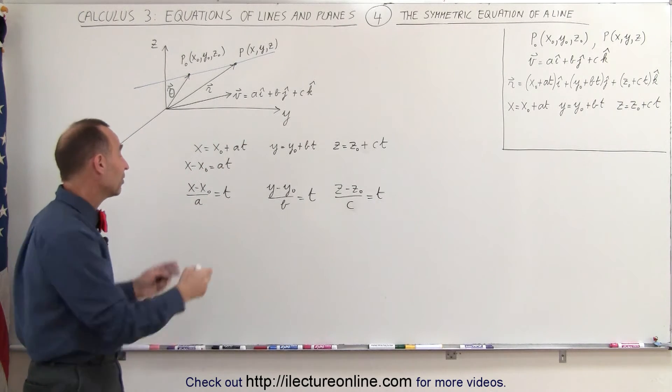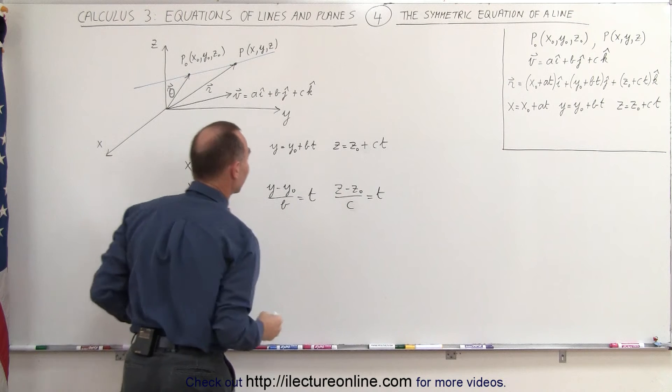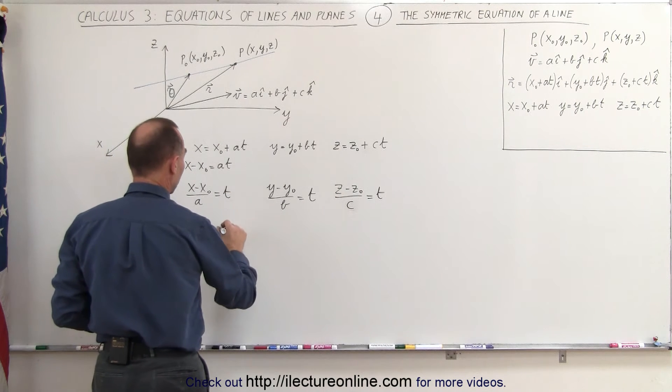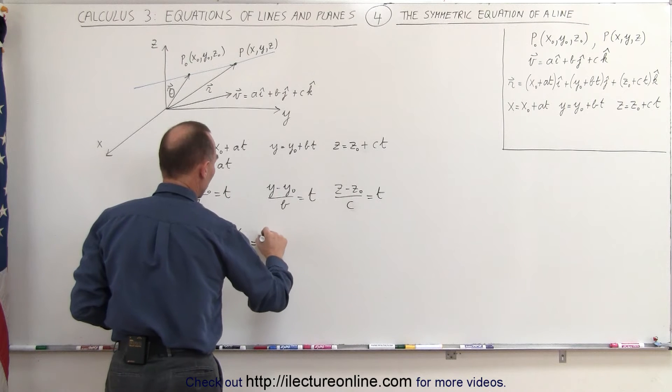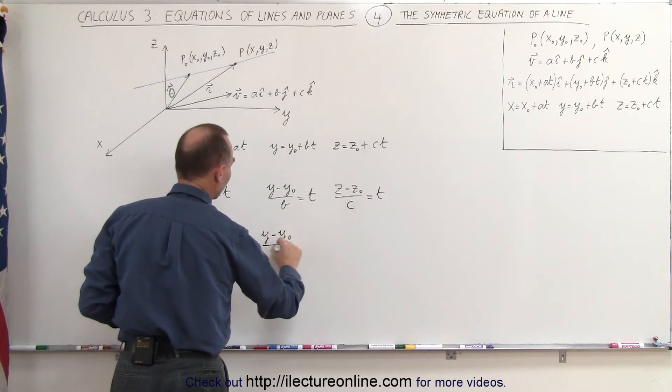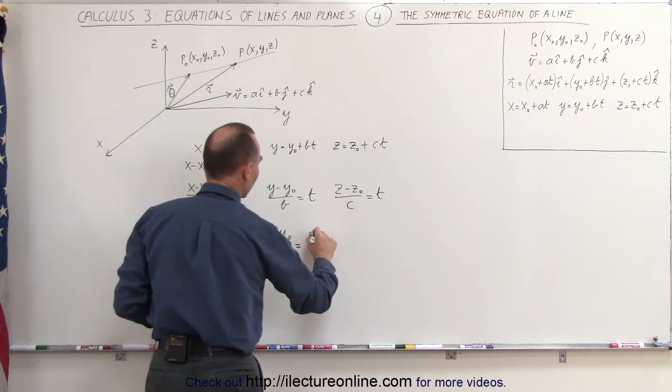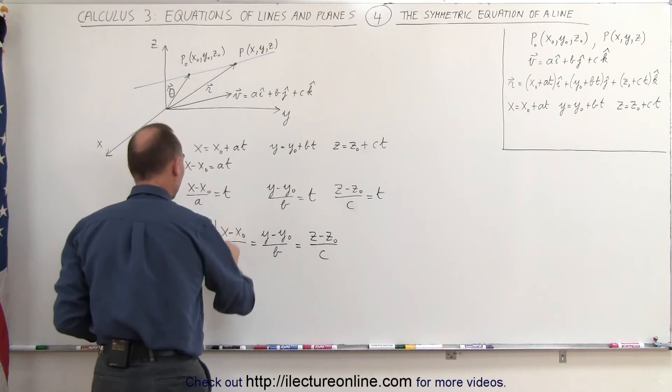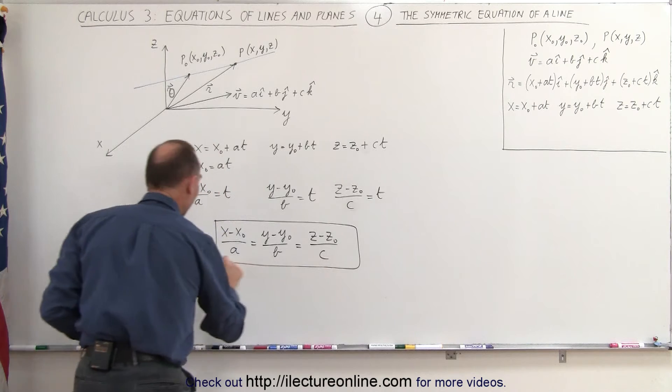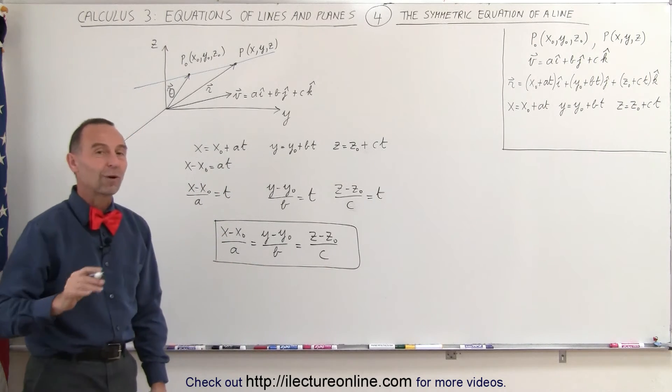If that's the case, that means that each of these, each of the left sides must be equal to each other, so we can write x minus x sub naught divided by a equals y minus y sub naught divided by b equals z minus z sub naught divided by c, and this then becomes the symmetric equation describing a line.